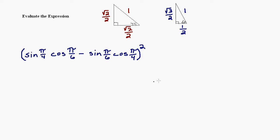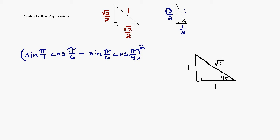You may have learned them in a different way. For example, in the 45-45-90, I have the hypotenuse as 1. If the hypotenuse is 1, then the two legs are square root 2 over 2, and you can derive that using the Pythagorean theorem. But you may also know the 45-45-90 by making the legs 1, and then if you use the Pythagorean theorem, you come up with the hypotenuse as the square root of 2. So you could use that as well.